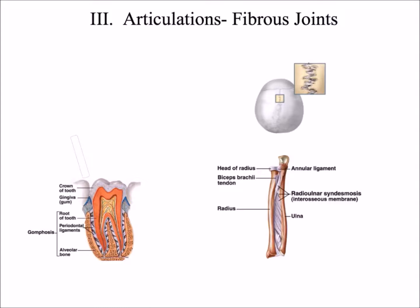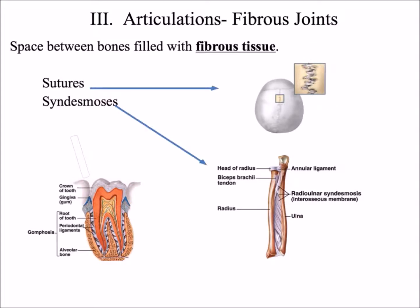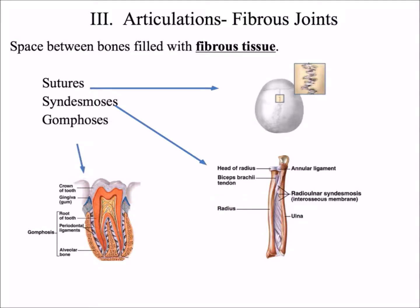The first structural classification is the fibrous joint, in which the space between the bones is filled with fibrous tissue. Examples include the sutures of the skull; a syndesmosis, which is the interosseous membrane between the radius and the ulna; and gomphosis, in which ligaments anchor the tooth to the gum.